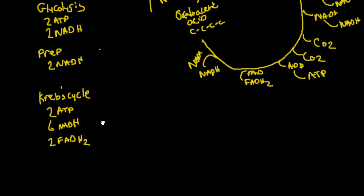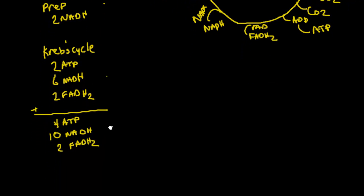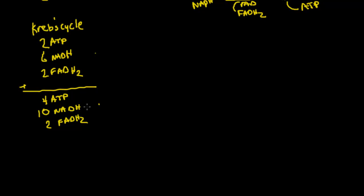So that's what we got out of the Krebs cycle. So what that gave us so far for total is 4 ATP, 10 NADHs, and 2 FADHs. And so that's the end of the Krebs cycle.